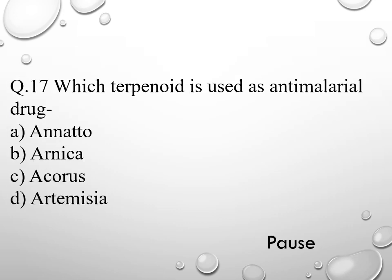Question 17. Which terpenoid is used as an anti-malarial drug? Option A annatto, option B arnica, option C acorus, and option D artemisia. The right answer is artemisia. So artemisia is the terpenoid used as an anti-malarial drug.